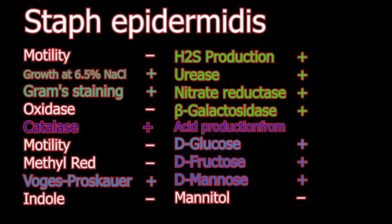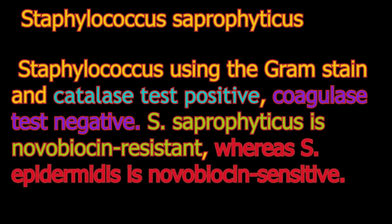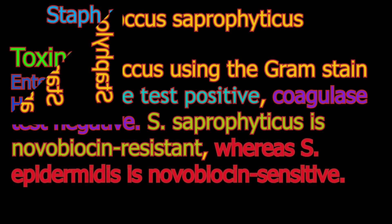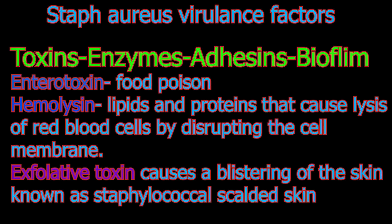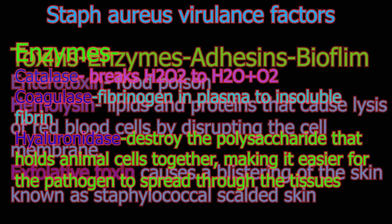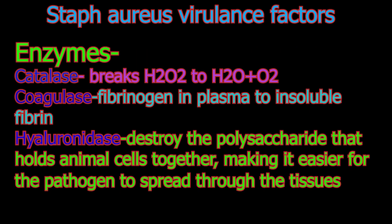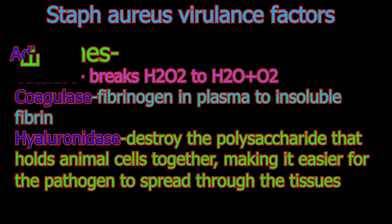Staphylococcus aureus — and two coagulase negative species, Staphylococcus epidermidis and Staphylococcus saprophyticus, are seen in human infections. Staphylococcus aureus produces a wide variety of virulence factors that contribute to its pathogenicity.